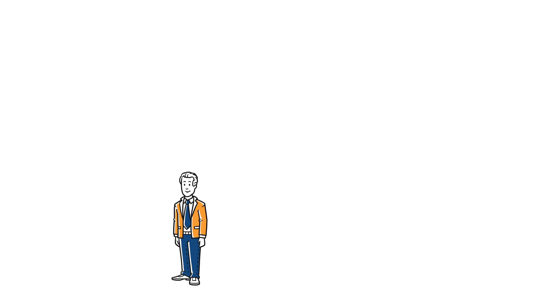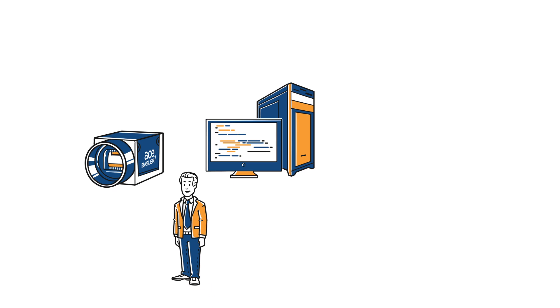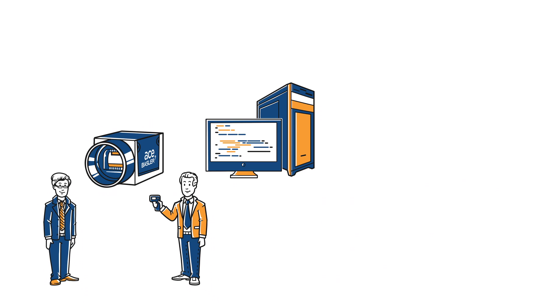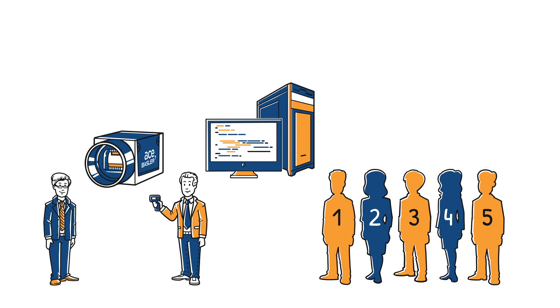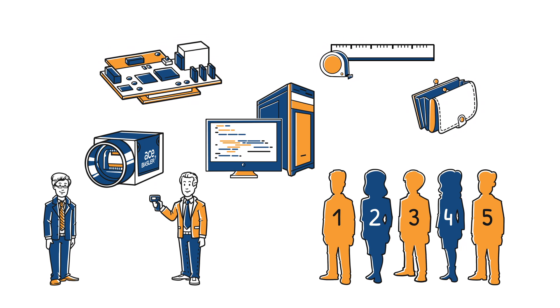Tom is a project manager in a company that produces various PC-based vision applications. His boss wants to develop a mobile device for counting passengers in a train cabin. Due to cost and space constraints, it must use an embedded architecture.